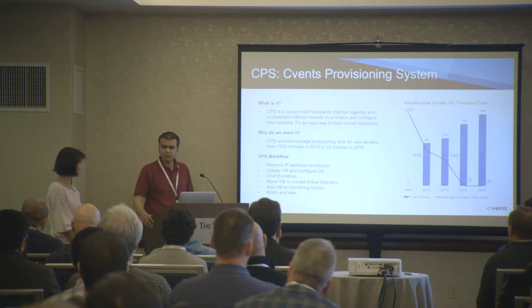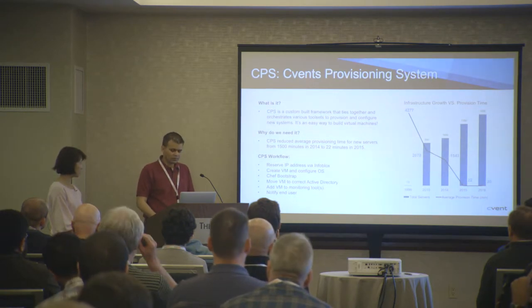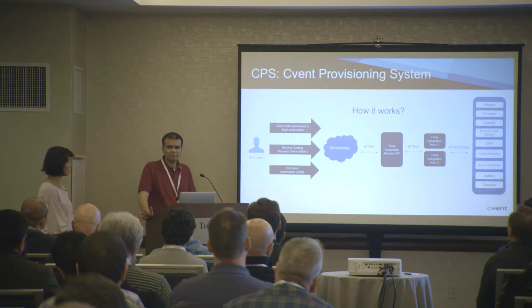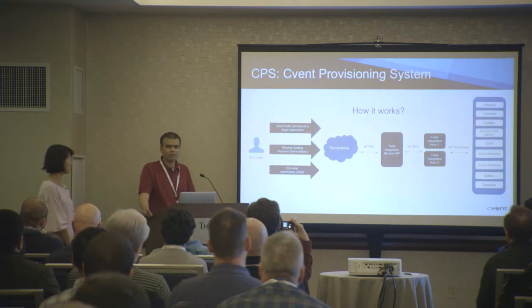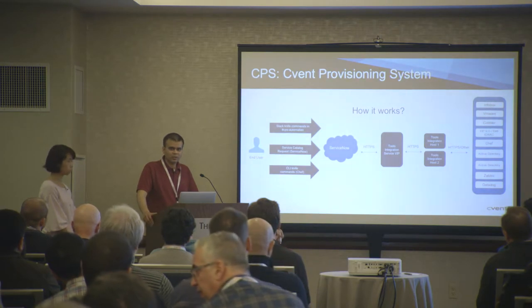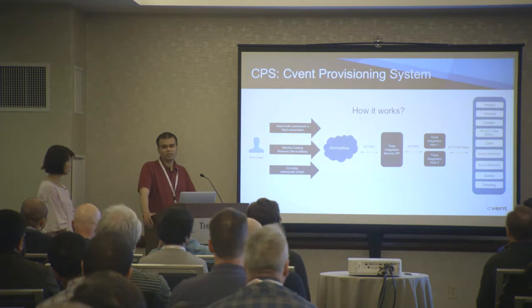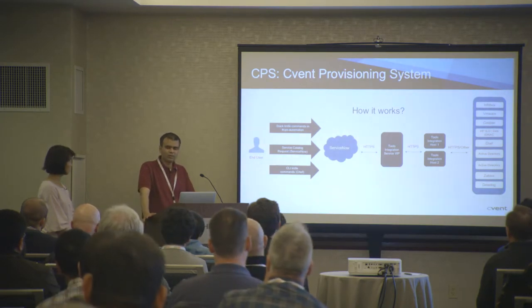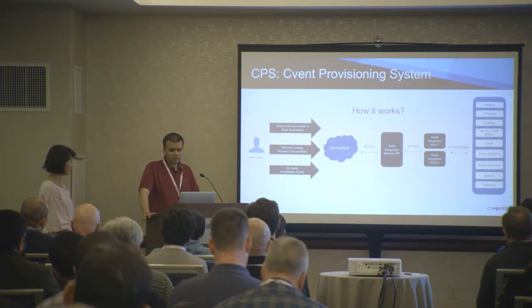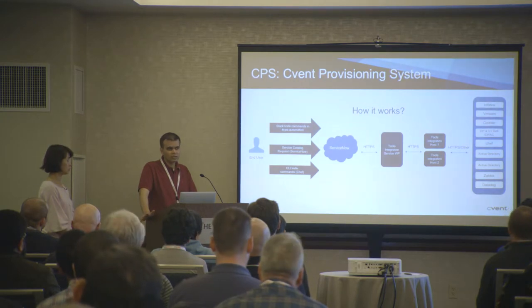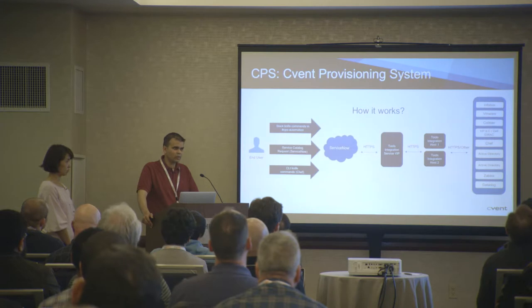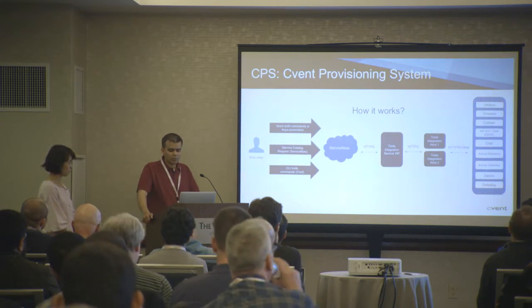At the end, it just provides a status to the end user saying whether it succeeded or failed at a certain step. The end user has three different ways to provision a VM: you could put a command in a Slack chat room and 20 minutes later have your VM ready; you could do it through a service catalog request in ServiceNow; or you could do it on your command line using the KNIFE CLI command. All three of them essentially send a request to ServiceNow, which passes it to a web app behind which we have multiple servers for load balancing. It makes API calls to get IPs from Infoblox, uses VMware as the virtual machine host, and then uses Cobbler to get the OS installed.